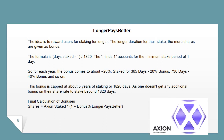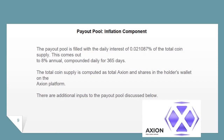Final calculation of bonuses: Shares equals Axion staked multiplied by (1 plus bonus percent from longer pays better). The payout pool is filled with the daily interest of 0.021087% of the total coin supply, which comes out to 8% annual, compounded daily for 365 days. The total coin supply is computed as total Axion and shares in the holder's wallet on their Axion platform.